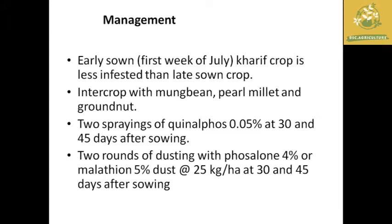Management for both capsule borer and leaf webber: early sown crops are less infested than late sown crops, so early sowing is a better management practice. We can also go for intercropping with moong bean, pearl millet, and groundnut. For chemical management, spray Fenvalerate at 0.05 percent concentration at 30 and 45 days after sowing, or apply Carbaryl 4% or Malathion 5% dust at 25 kg per hectare at 30 and 45 days after sowing.